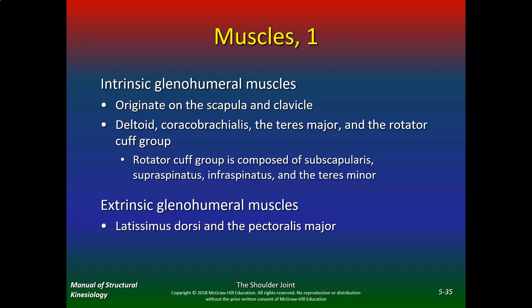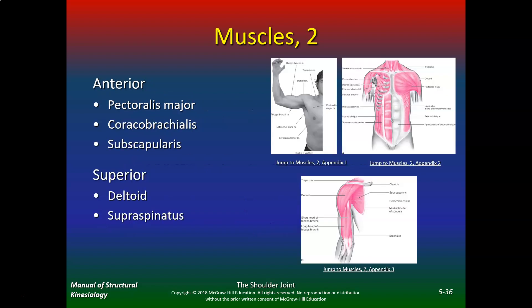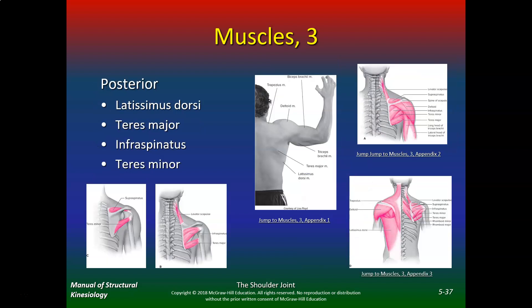The extrinsic glenohumeral muscles are pec major and lats. Anteriorly, you have the pec major, coracobrachialis, and subscapularis. Superiorly, you have the deltoid and supraspinatus. Posteriorly, you have lats, teres major, infraspinatus, and teres minor.